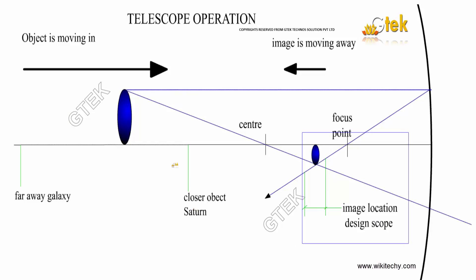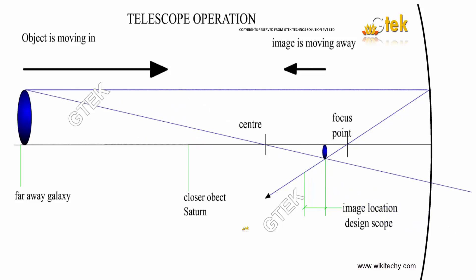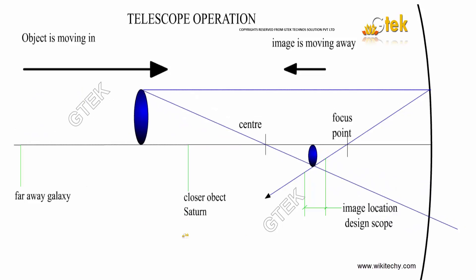This one is the closer object which is called Saturn. This is how the view and the operation of a telescope will be.